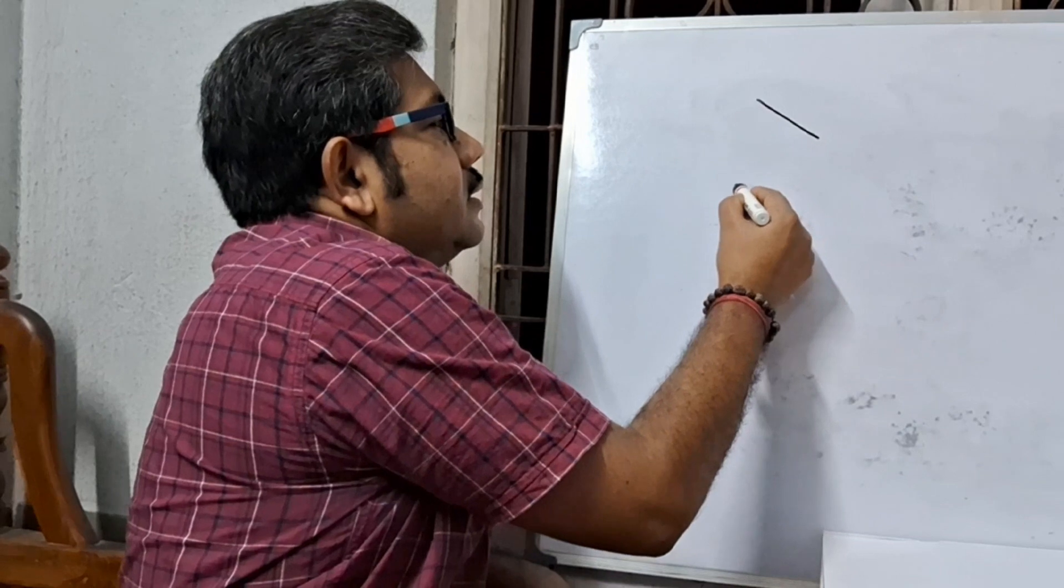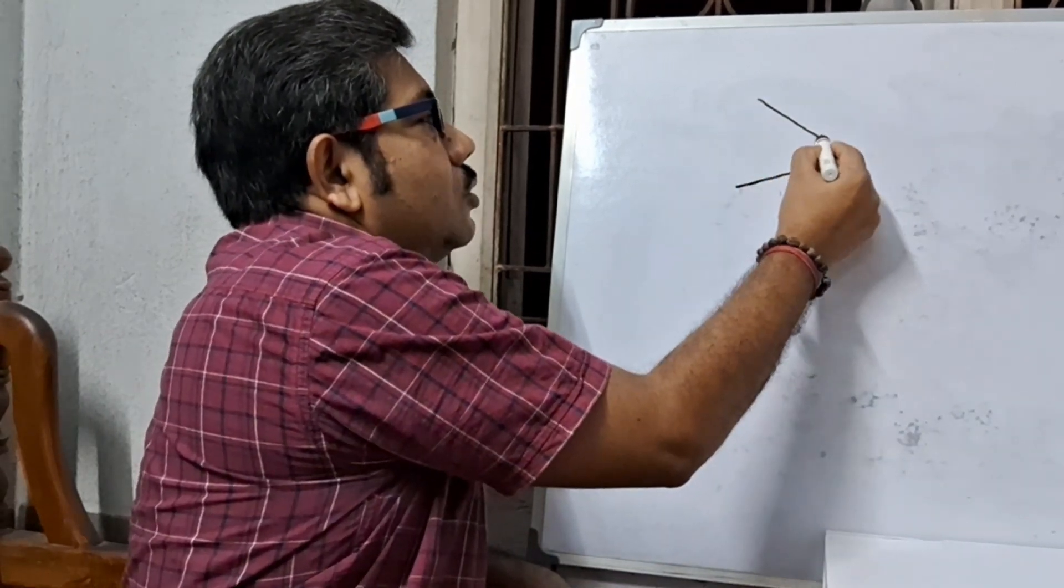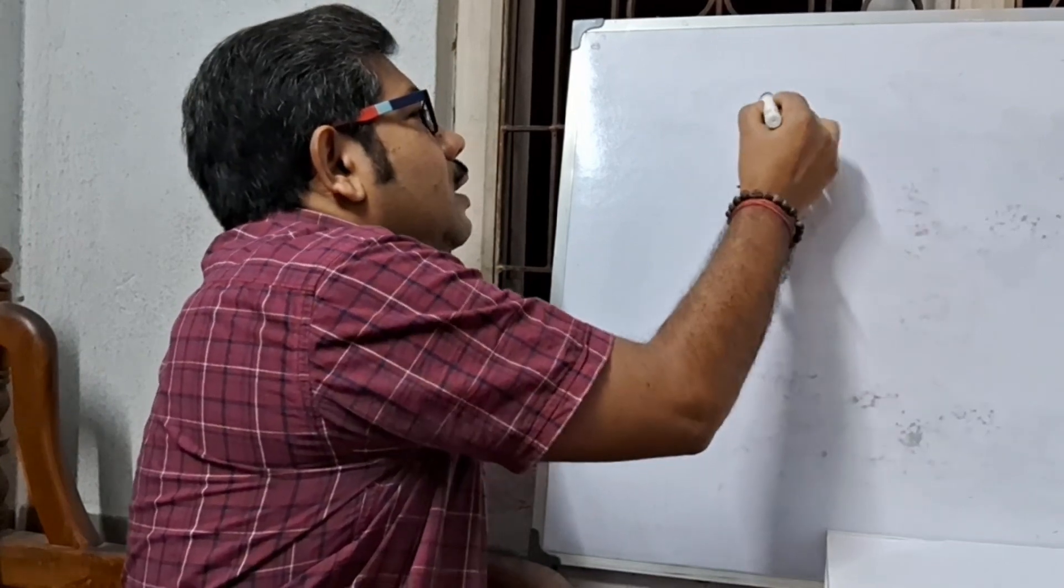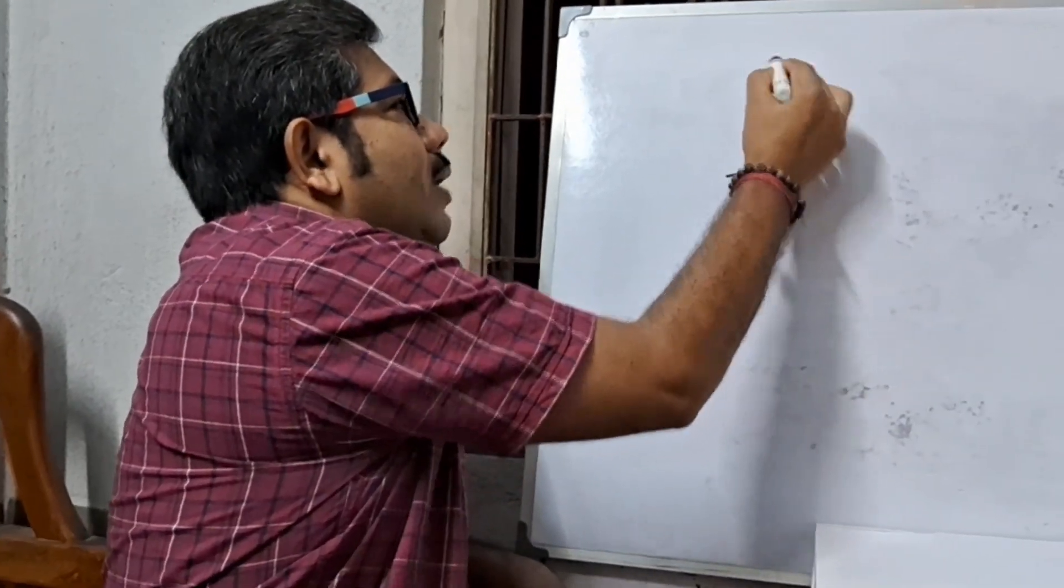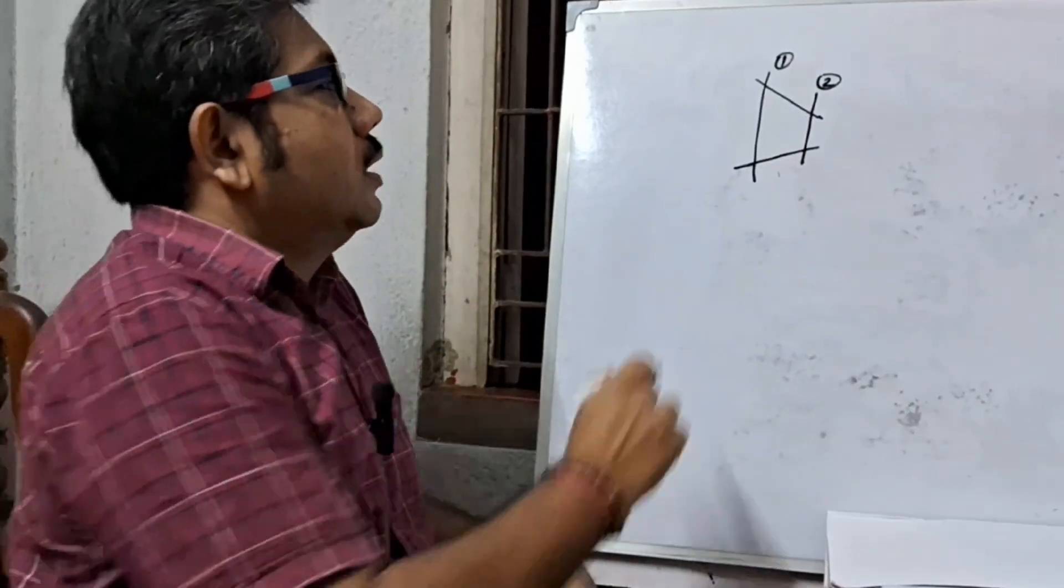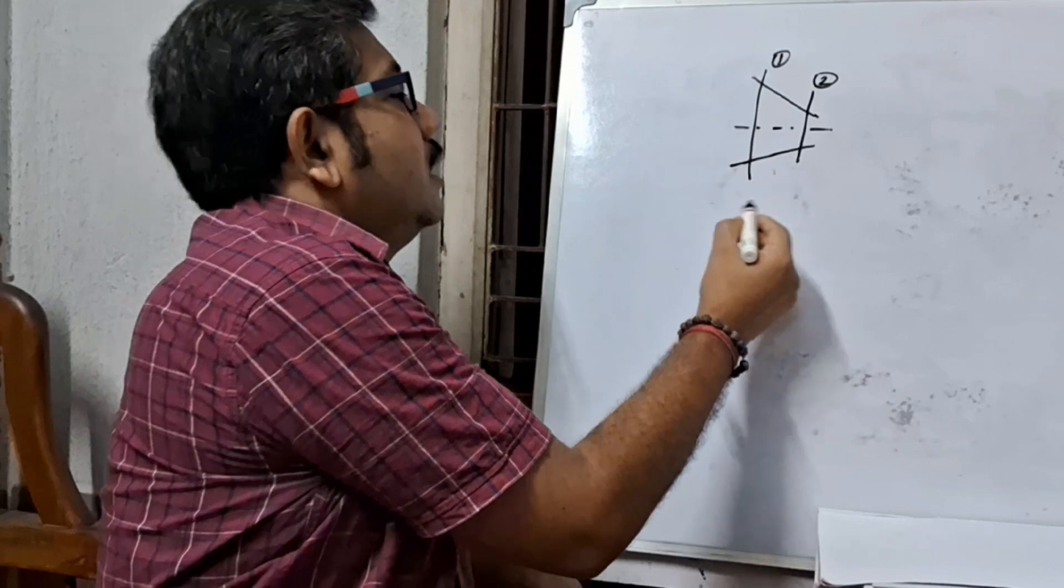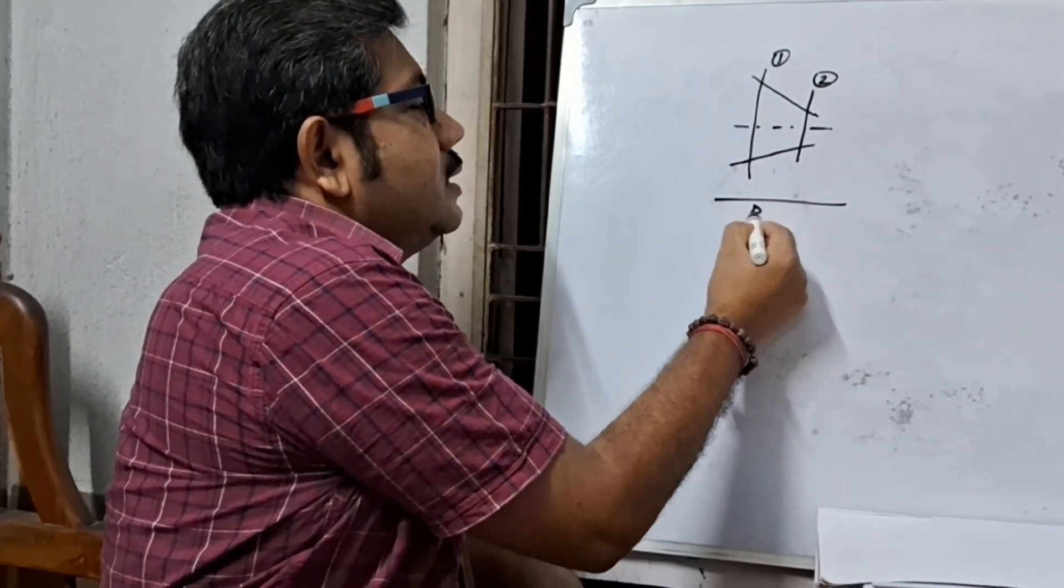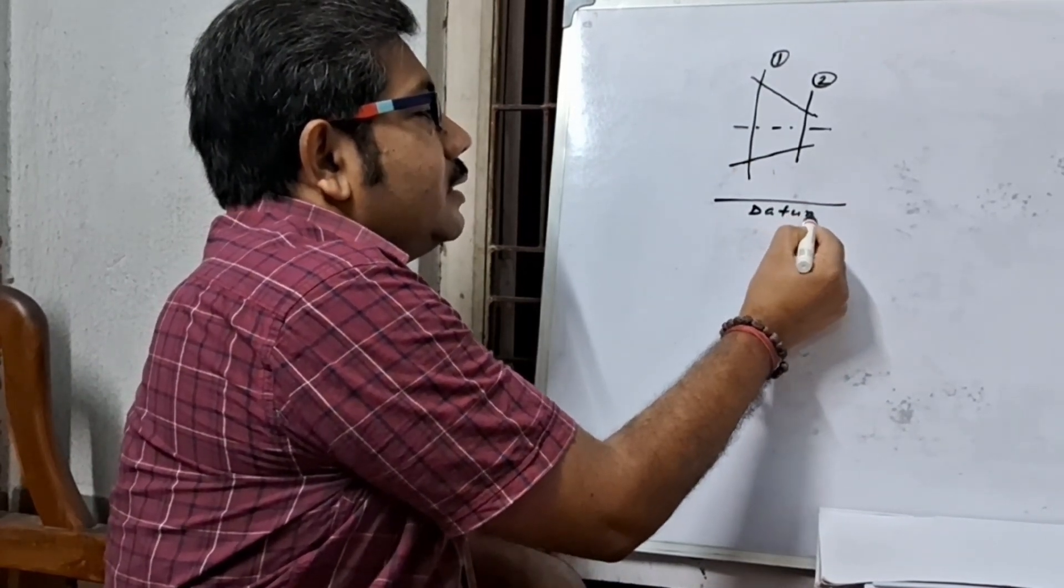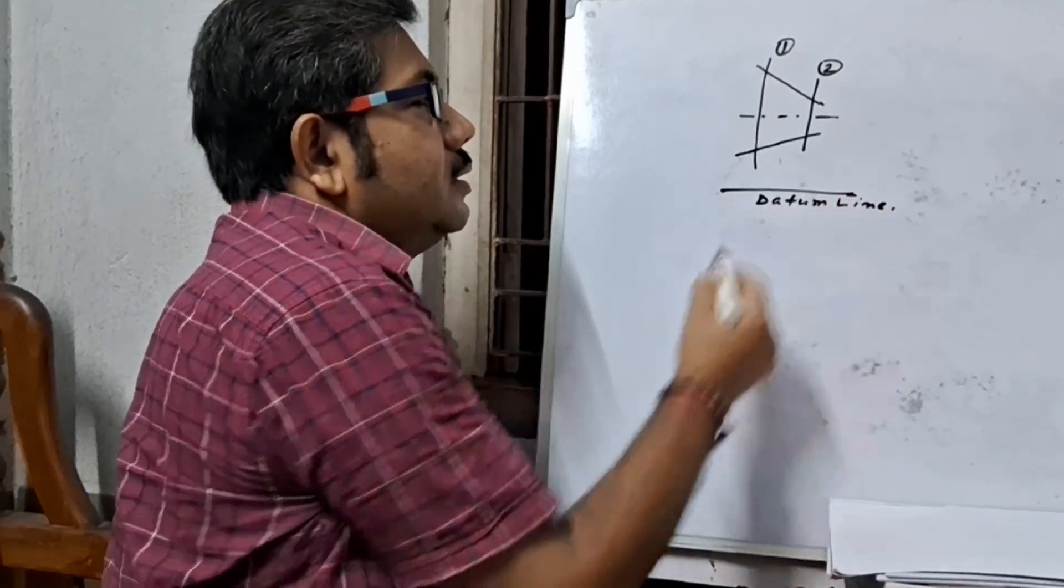Assume it is a nozzle. This is section 1 and this is section 2. This is the centerline. And this is the datum line.